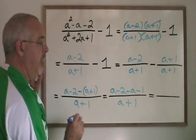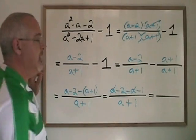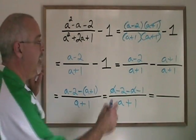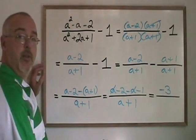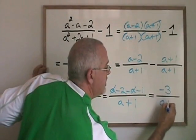When I simplify further, these a's cancel. a minus a is 0. And I have minus 2 minus 1, which combines to minus 3, still over the common denominator, a plus 1.